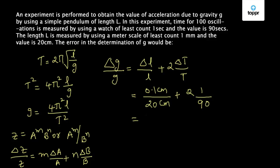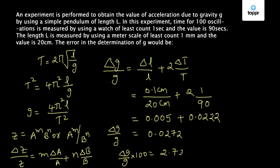That is 0.005 and this is 0.0222. That equals 0.0272. This is the relative error in determining g. If you want percentage error, that is times 100, so that is 2.72 percent.